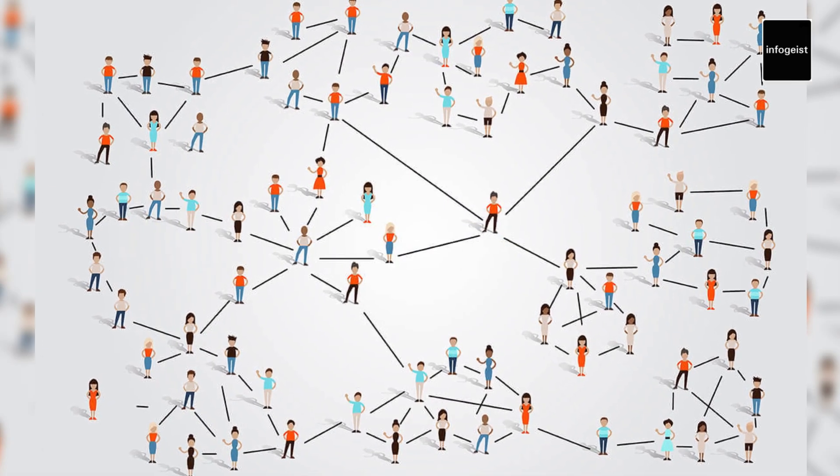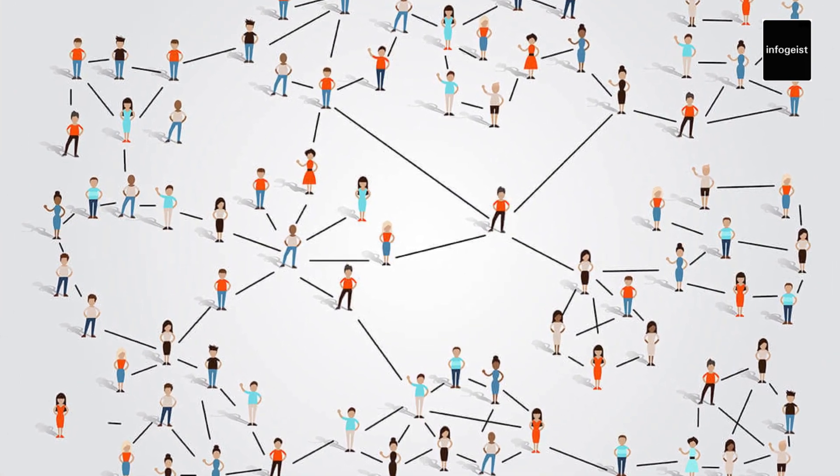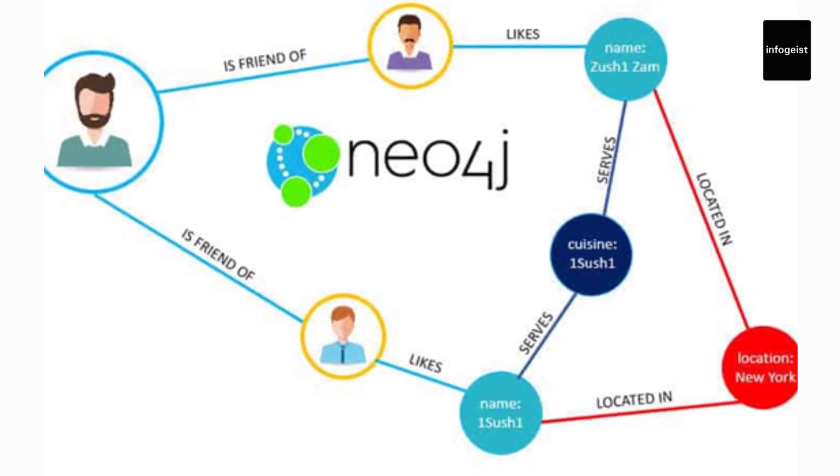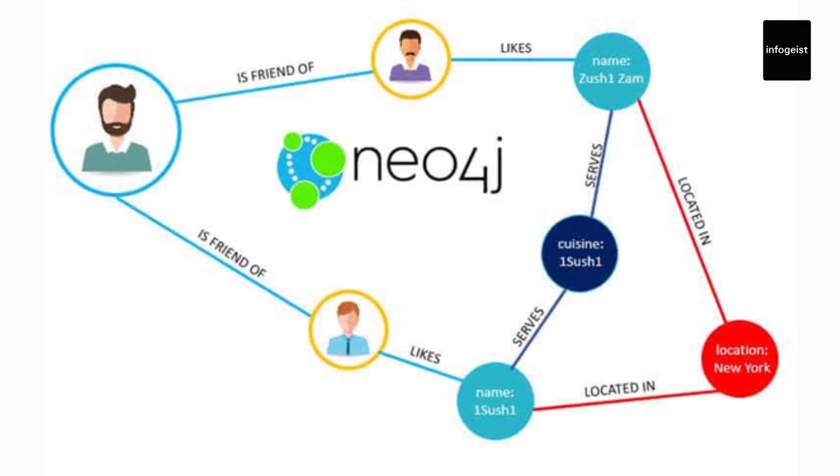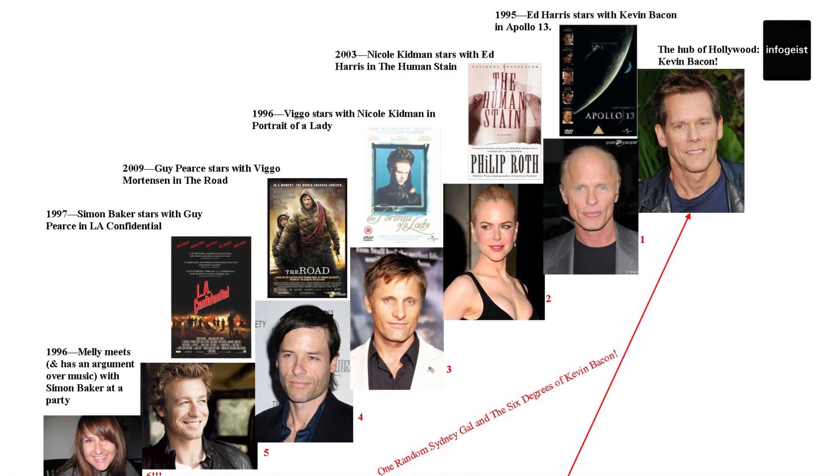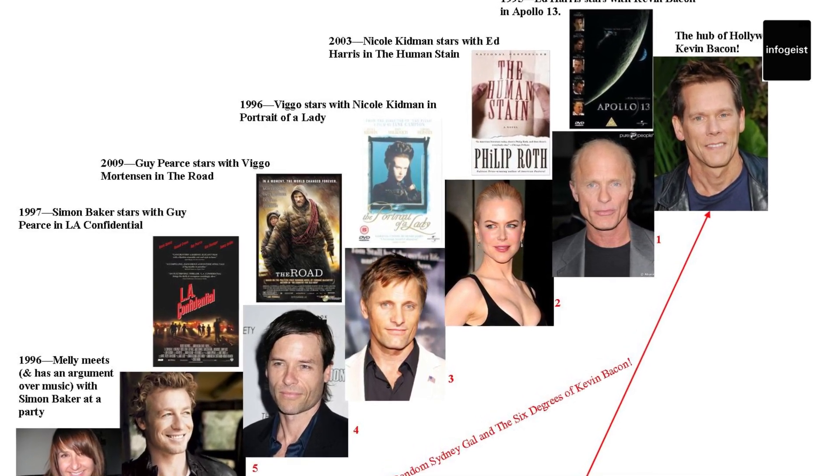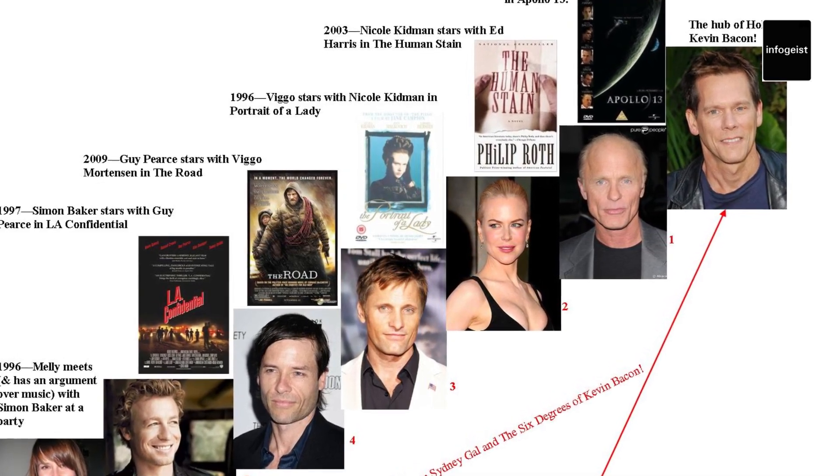Understanding how six degrees of separation works requires insight into the structure of social networks. Networks are often characterized by clusters of densely connected individuals, known as cliques, and bridges between these clusters that facilitate connections. These bridges, or weak ties, play a crucial role in the six degrees phenomenon. They connect disparate clusters, enabling the flow of information and connections across the entire network.